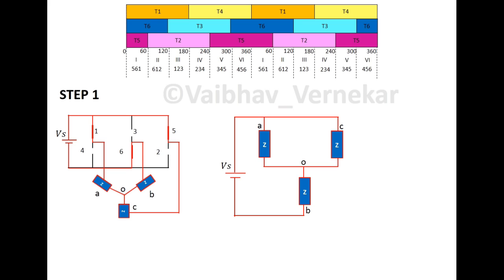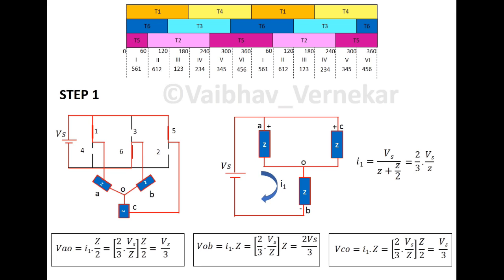As OA and OC are in parallel and the combination is in series with OB, the total circuit impedance is Z plus Z by 2. If a current I1 flows in the closed circuit, it will drop potential as per polarity shown. The value of current is given by total voltage divided by the total impedance which in this case is 2 by 3 into VS upon Z. The total voltage drop across each impedance will be total current multiplied by total impedance. The voltages developed will be VAO, VCO and VOB. Note that we consider OB and not BO as O is neutral hence more positive compared to B which is connected to negative terminal in step 1.